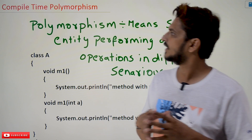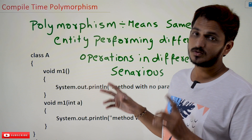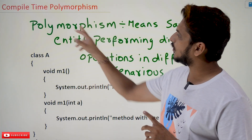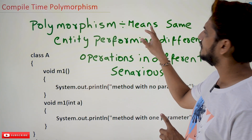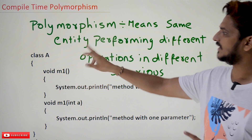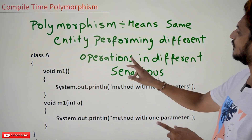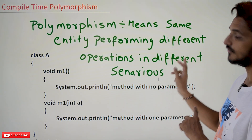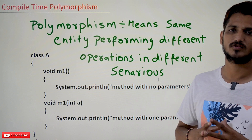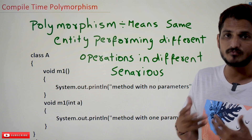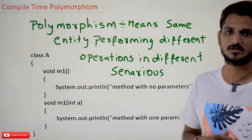Coming to today's class. First, we are going to understand what's the concept of polymorphism. Polymorphism means the same entity performing different operations in different scenarios — we call it as polymorphism. This is one of the object-oriented programming concepts.